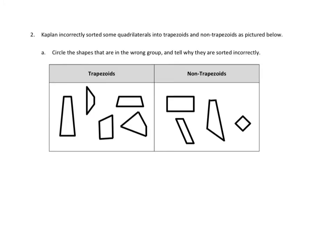Let's take a look at one more problem from tonight's homework. In this one, it's told that Kaplan incorrectly sorted some quadrilaterals into trapezoids and non-trapezoids as pictured below. Circle the shapes that are in the wrong group and tell why they are sorted incorrectly. Well, I don't want to rob you of the chance of solving all these problems. I'm going to look at a couple of these and just see if I think that they're right.